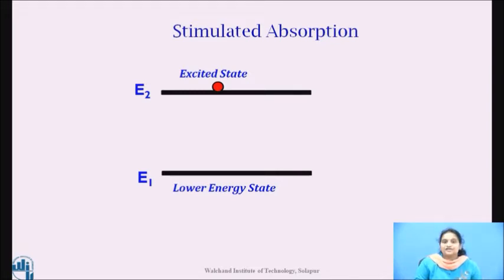In this way, in each absorption transition, one atom is excited and one photon is lost from the incident light beam. Now, suppose, A is an atom in the lower state and A star is an excited atom, then we may express the absorption process as A plus h nu gives A star.